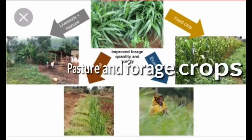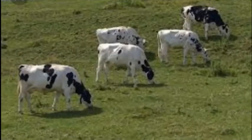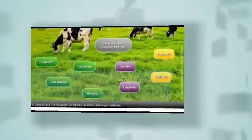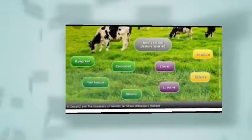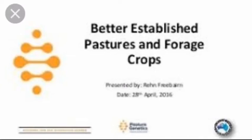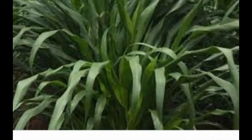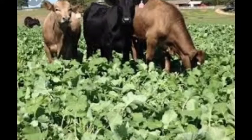Hi everyone, good day. Today I'm going to educate you on pasture and forest crops. Livestock, especially ruminants, feed on grasses and pasture. Any area which is used for grazing from animals is called a pasture. Good pastures are made of good quality grasses, a proportion of legumes, and a few weeds.